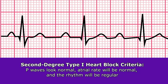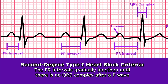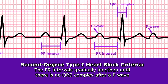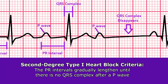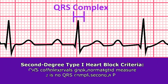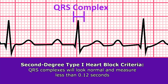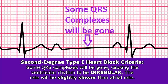Looking at the characteristics and criteria for a second degree type 1 heart block: you'll see normal-looking P waves, which tell us about the atrial rate and rhythm. The atrial rate will be normal and the rhythm will be regular. The hallmark is gradually longer PR intervals until a QRS complex is missing behind a P wave. When QRS complexes do appear they look normal and measure less than 0.12 seconds, but because some are dropped, the ventricular rhythm is irregular and the ventricular rate is slightly slower than the atrial rate.